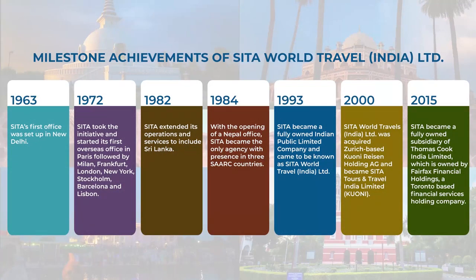In the year 1963, Sita's first office was set up in New Delhi with three staff. In the year 1972, after ten years of dedication and hard work, Sita started its own overseas offices in Paris, followed by Milan, Frankfurt, London, New York, Stockholm, Barcelona, and Lisbon. Year 1982 was also very important — Sita extended its operations to include Sri Lanka and opened an office there. In 1984, with the opening of a Nepal office, Sita became the only travel agency with a presence in three SAARC countries. In 1993, Sita became a fully owned public limited company, now known as Sita World Travel India Limited.